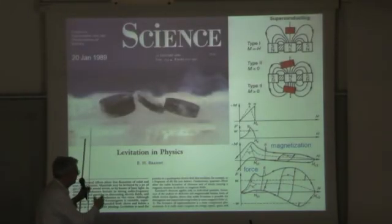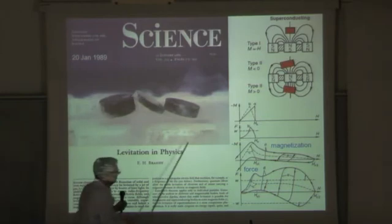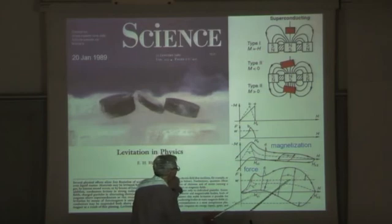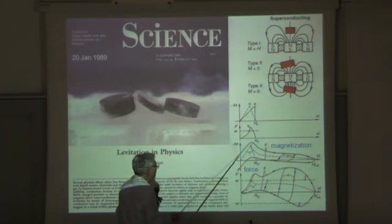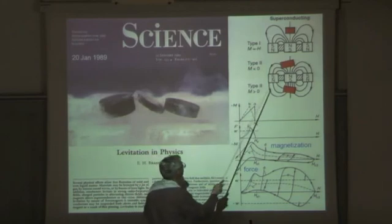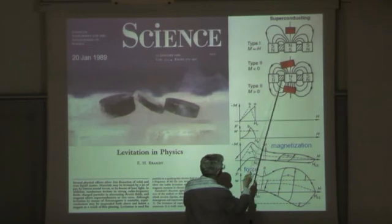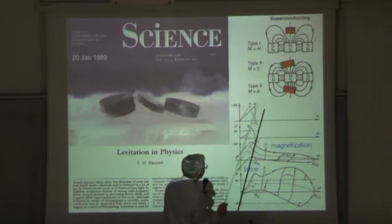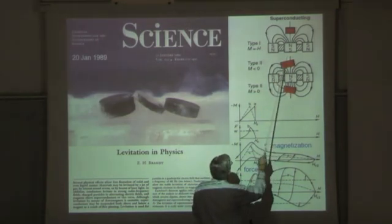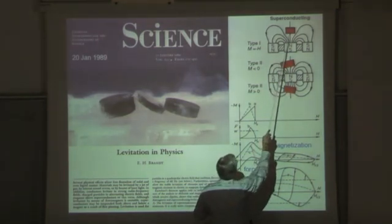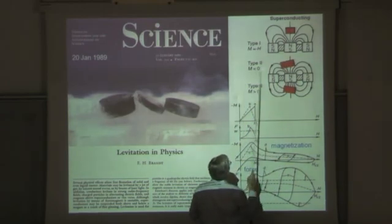One important result of vortex pinning is that the magnetization curves are now strongly irreversible, so you can have very large irreversible magnetic moment, and therefore levitation works very well. The magnetic moment is much larger than in the Meissner state, and also you now have stable levitation. When you have a type 1 superconductor, it levitates but it's not stable — it will fall to the floor.